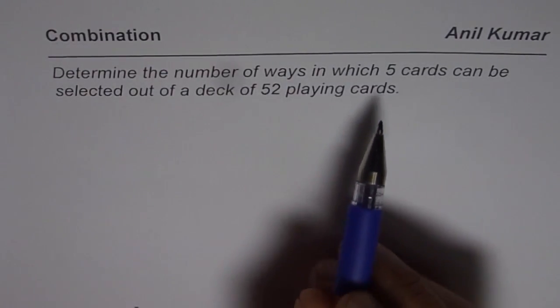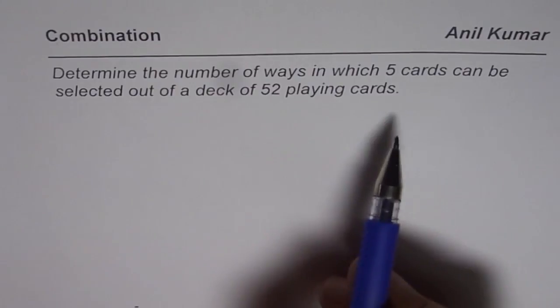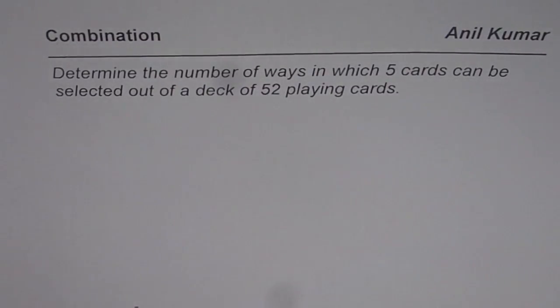It is important to note that when you select a combination of 5 cards then their order does not really matter. So therefore this is an example of combination not permutation.